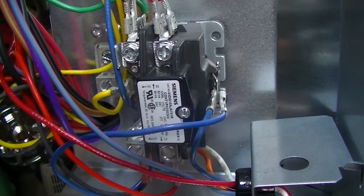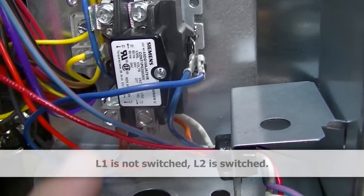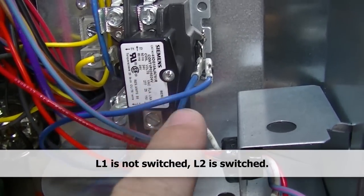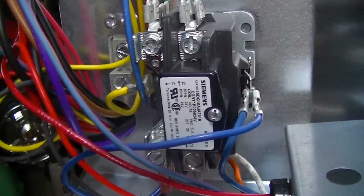This contactor would be described as a single pole or one pole contactor. Only one leg is switched beneath this cover here. This cover is on to keep insects out of it. We'll take it off here in a second and take a look at the switch.